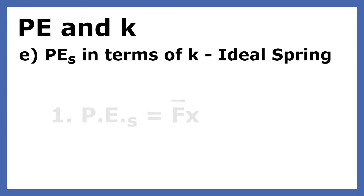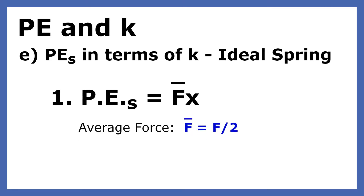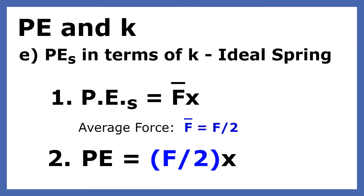In the next few slides I will derive an equation for the potential energy of a spring that includes the spring constant. This equation is found on your reference table. The potential energy of a spring is the product of the average force used to stretch the spring and the stretch measured in meters.